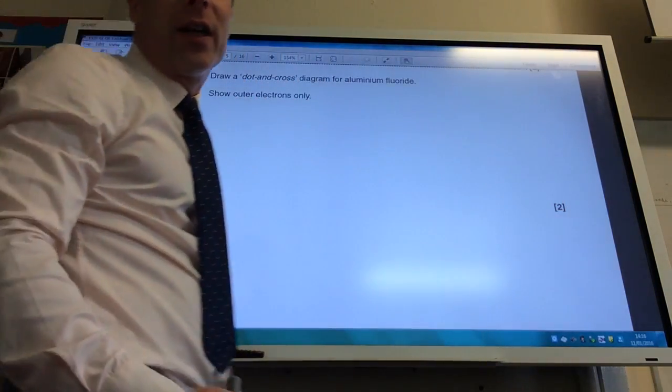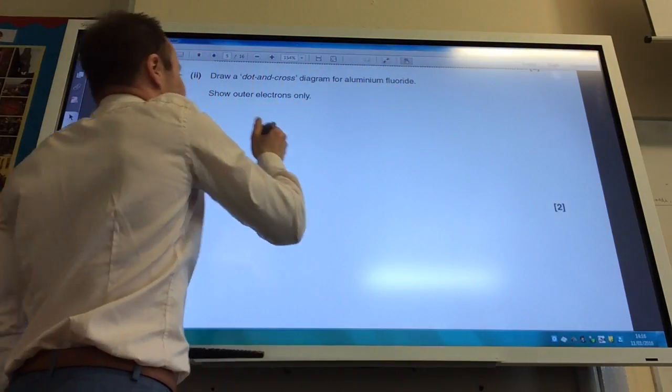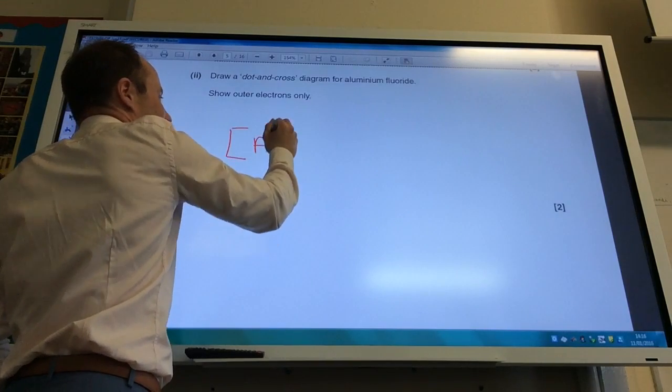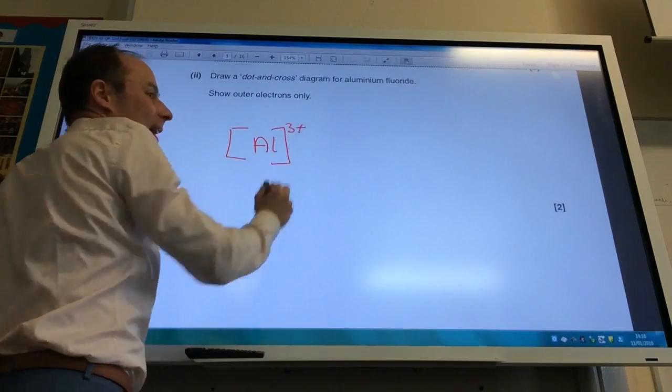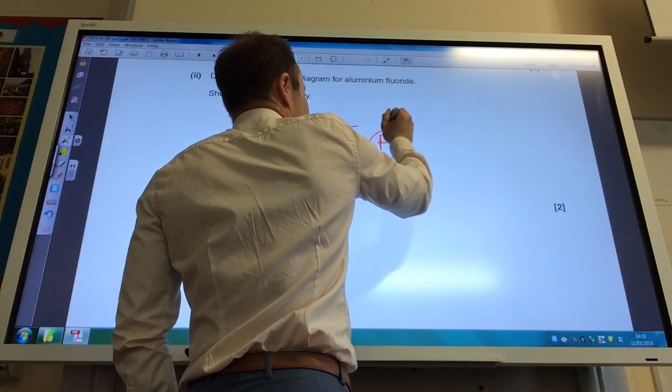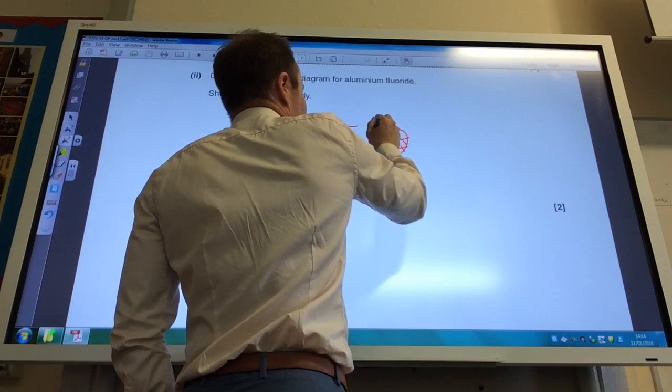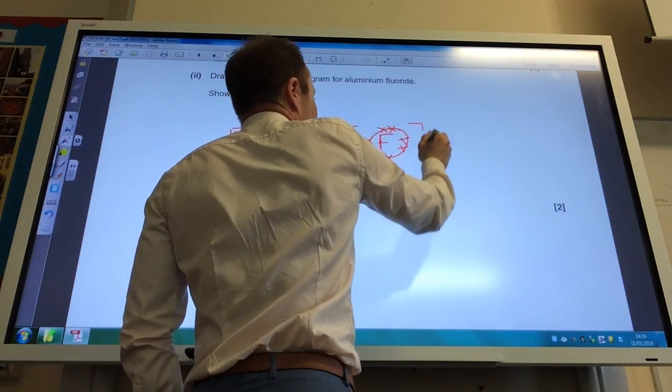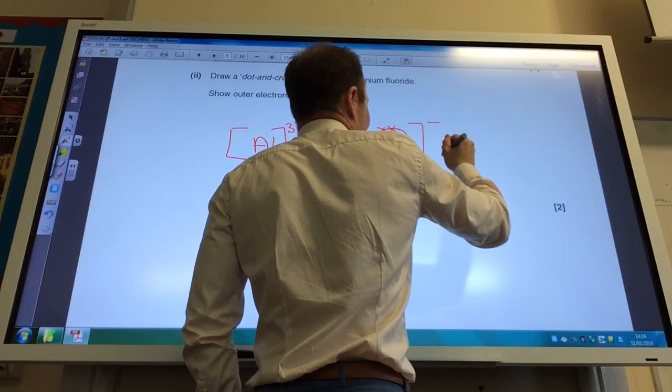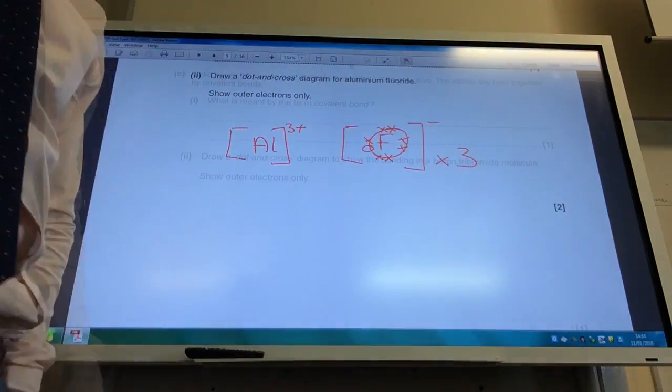We're now going to draw a dot and cross diagram of aluminum fluoride. We just said aluminum fluoride is ionic. Aluminum has lost its three outer shell electrons, so that just becomes Al3+. Each fluorine atom has seven electrons. He's going to gain one from the aluminum, so you're going to end up with three of those F minus ions.